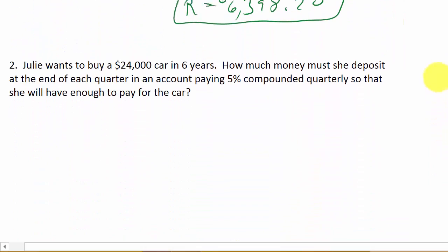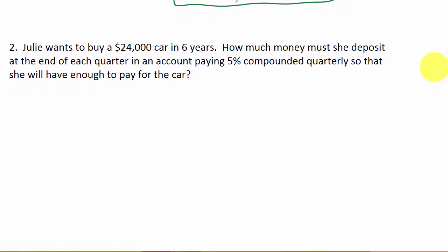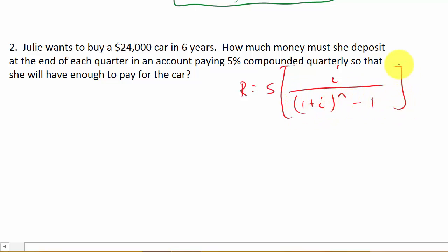So let's look at the next one. It says Julie wants to buy a $24,000 car in six years. How much money must she deposit at the end of each quarter in an account paying 5% compounded quarterly so that she will have enough to pay for the car? So, well, once again let's write our formula down. R is equal to S times I over 1 plus I to the N minus 1.